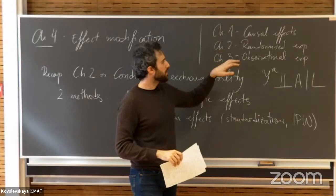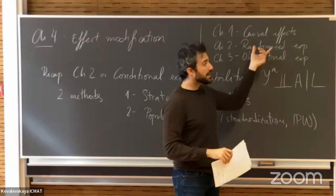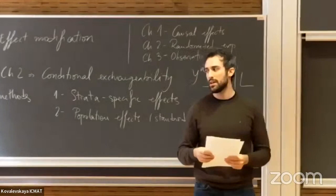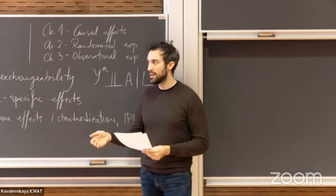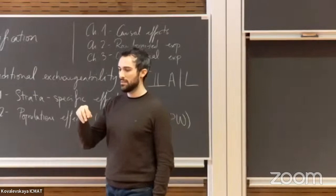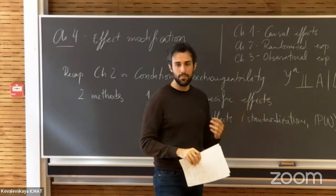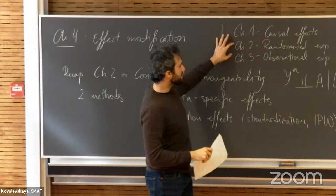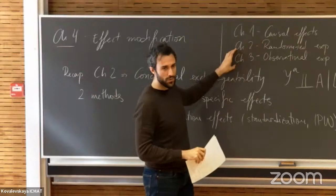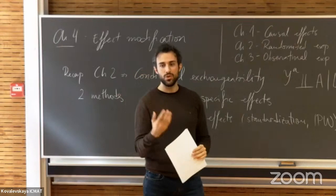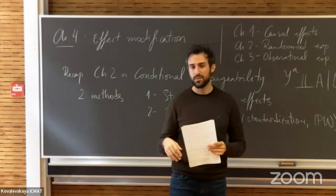In chapter two, we continued the argumentation given in chapter one as a way to consistently estimate causal effects from randomized experiments. Ideal randomized experiments provide a way to consistently estimate causal effects because you can identify these risks or potential outcomes from just the randomization. The core idea is to make the missing data appear randomly so it balances out somehow. This is true for randomized experiments, but in observational experiments you don't usually have this luxury.